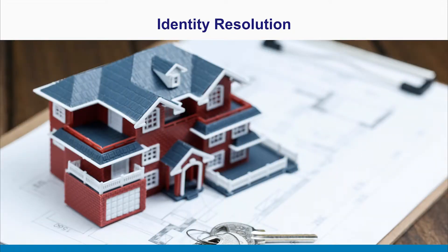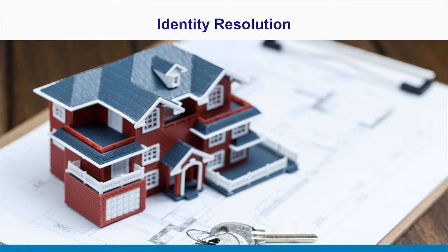In this example, we have a real estate broker, and somebody comes to visit a real estate website. Because the website has our identity pixel installed, we immediately get the email hash, resolve it in real time, and identify where Sarah lives. We then push that address out to Google Maps, pull up a map of Sarah's house, and ask the question on the real estate website: 'Is this the house you want to try and sell?' Pretty powerful.